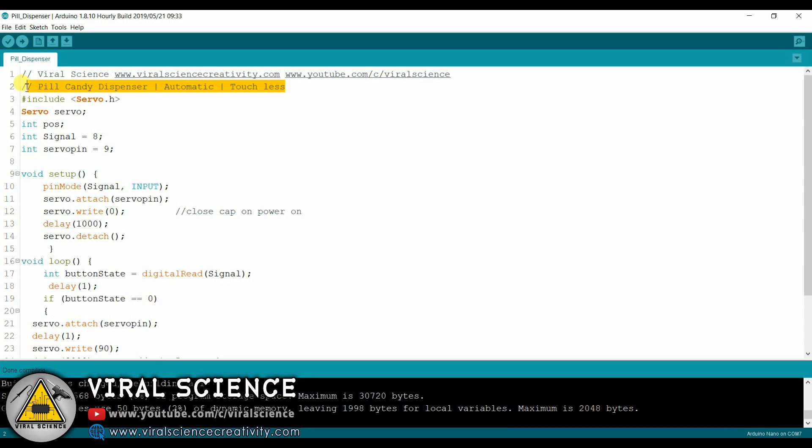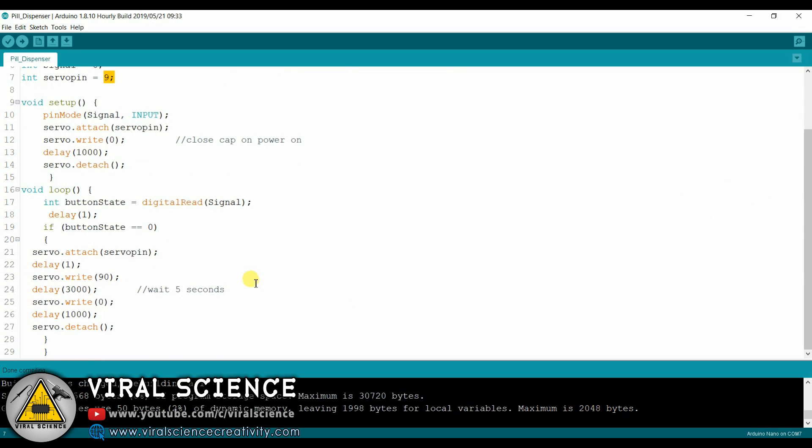So friends, this is the code of our today's project. I have connected IR sensor to the D8 pin of the Arduino and the servo motor to D9 pin of our Arduino. This is very simple code. When IR sensor detects any object in front of it, the servo motor rotates to the 90 degree for 3 seconds.